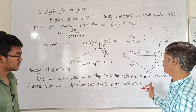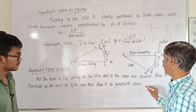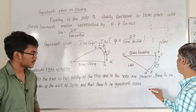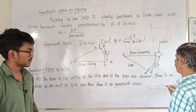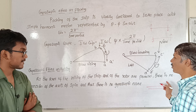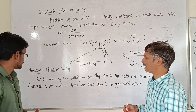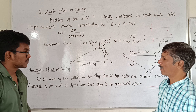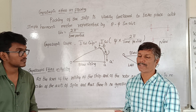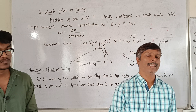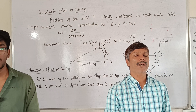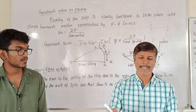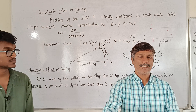As the rolling of the ship and the rotor are parallel, there is no precession of the axis of spin, and thus there is no gyroscopic effect. The two motions to consider are steering and pitching.